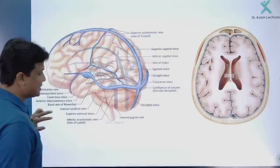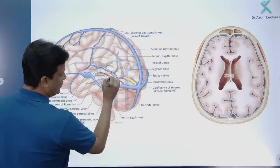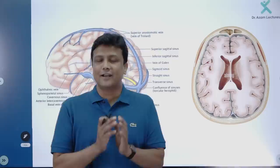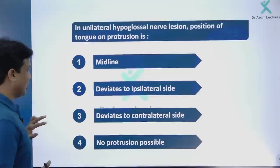One more important point: the straight sinus is the continuation of the vein of Galen, also known as the great cerebral vein. So another MCQ learned here is: the great cerebral vein or vein of Galen continues as the straight sinus.